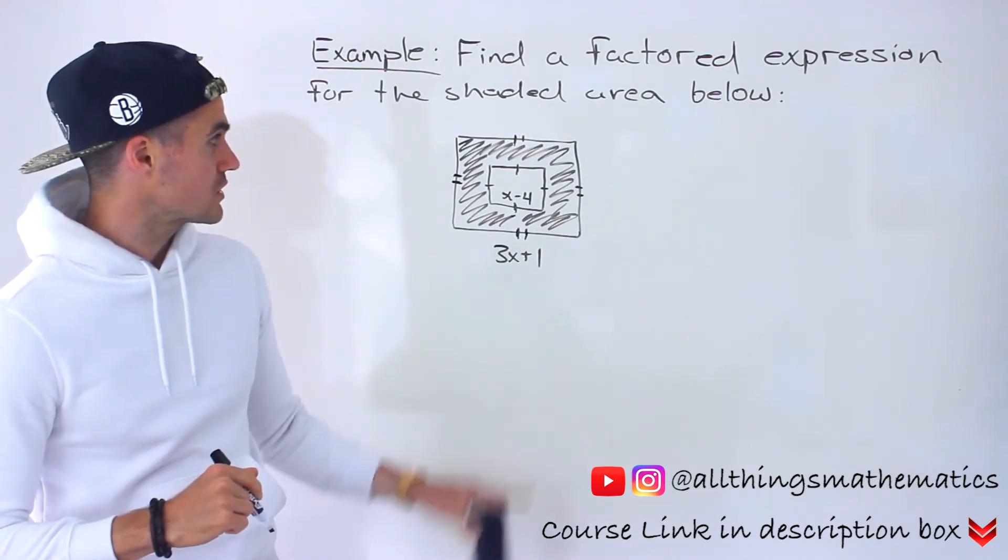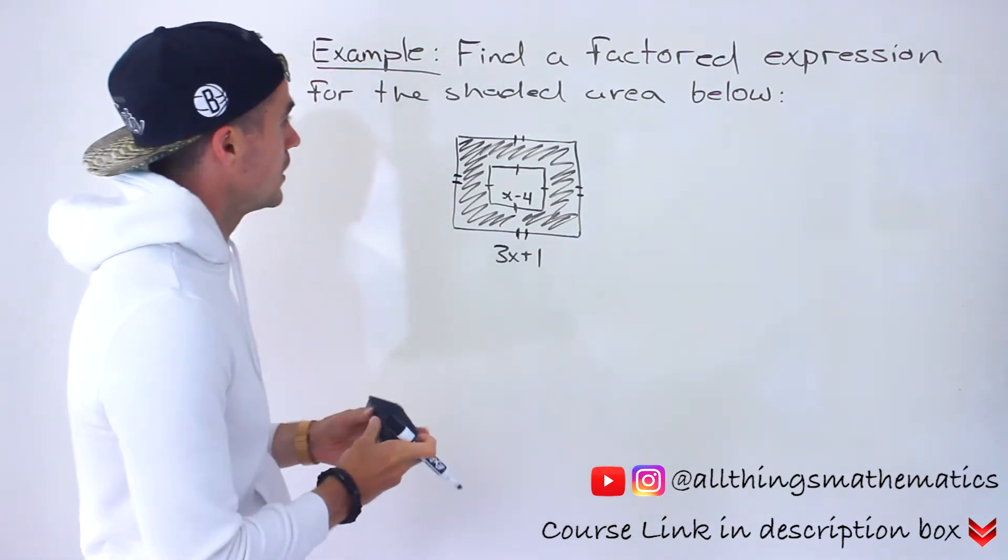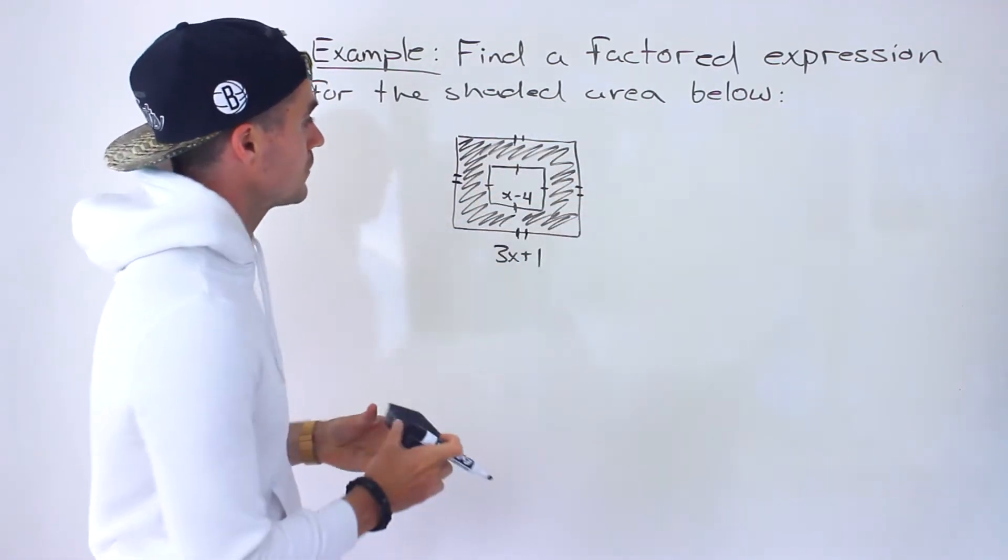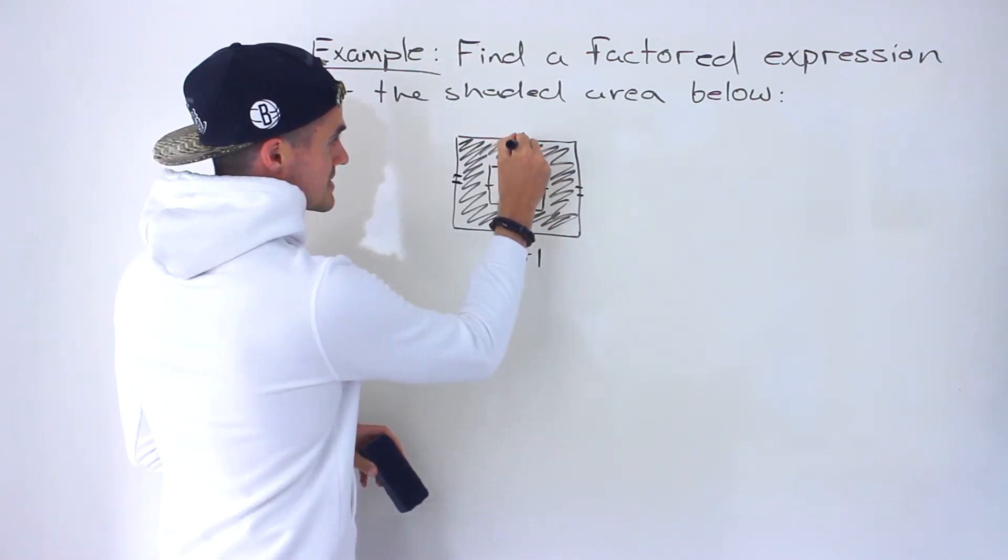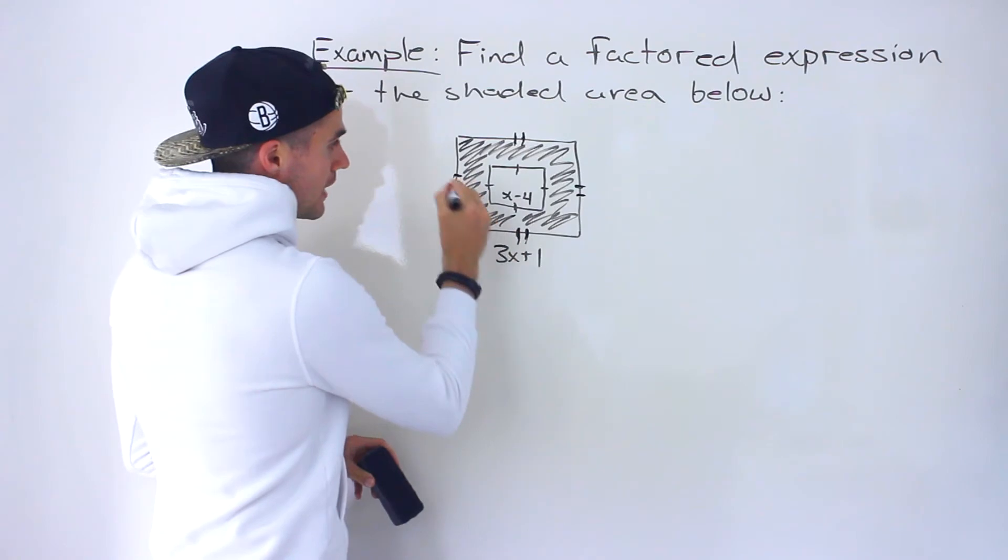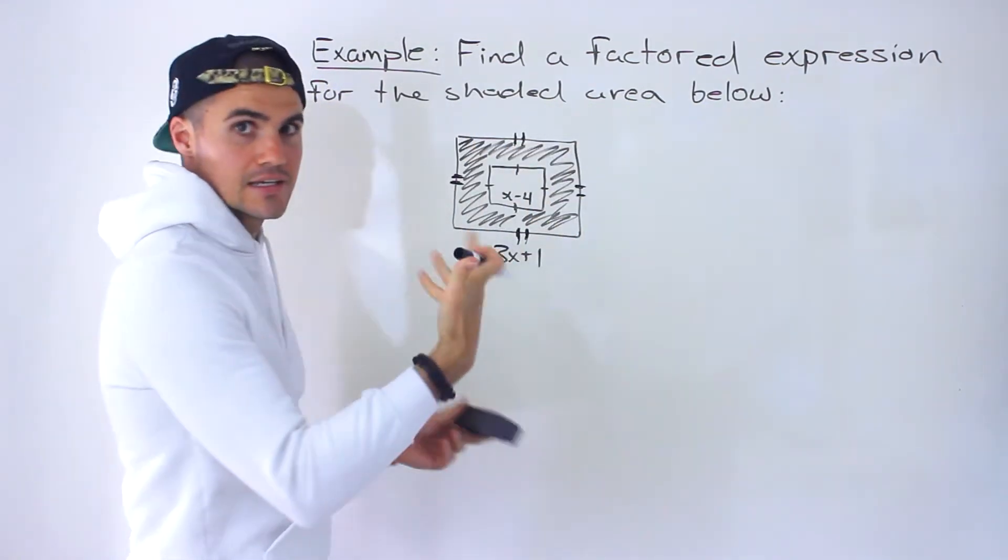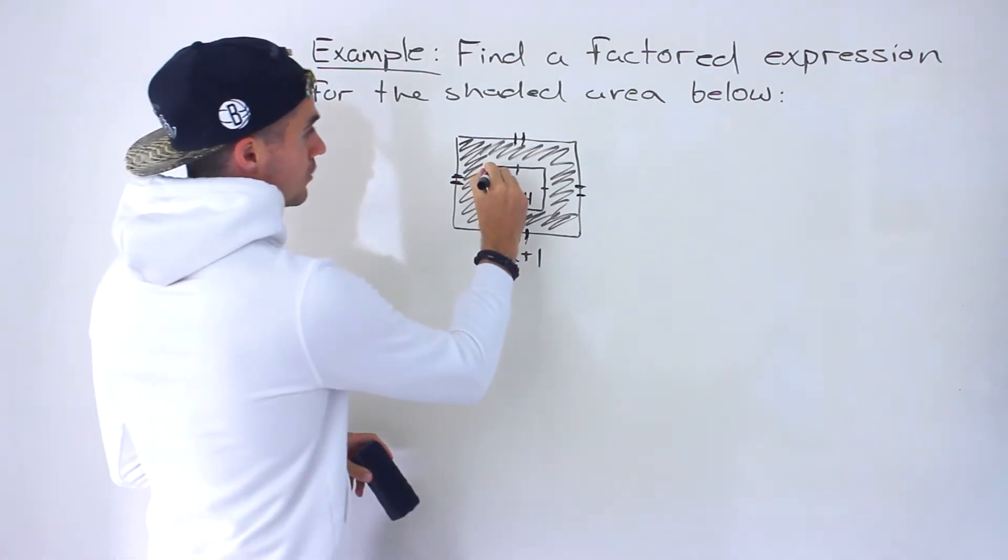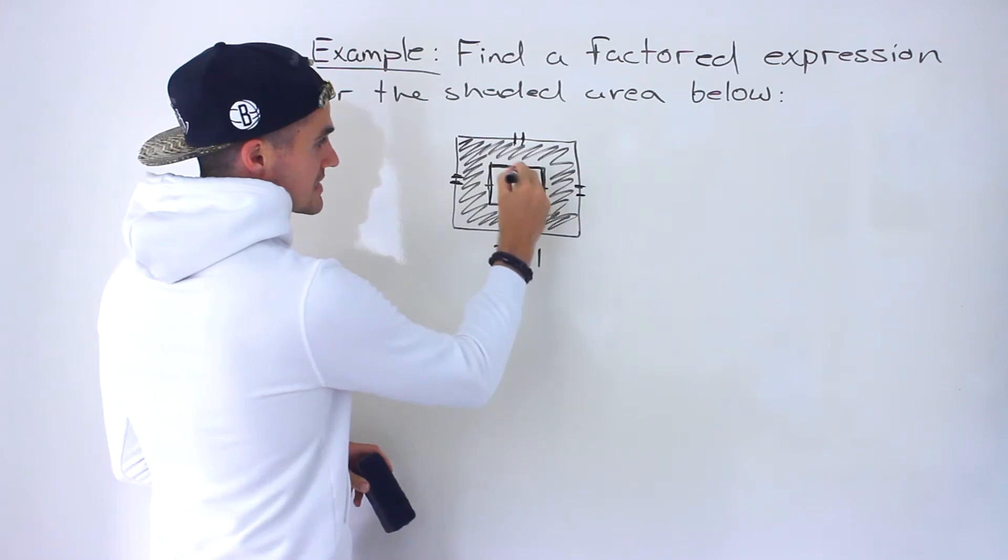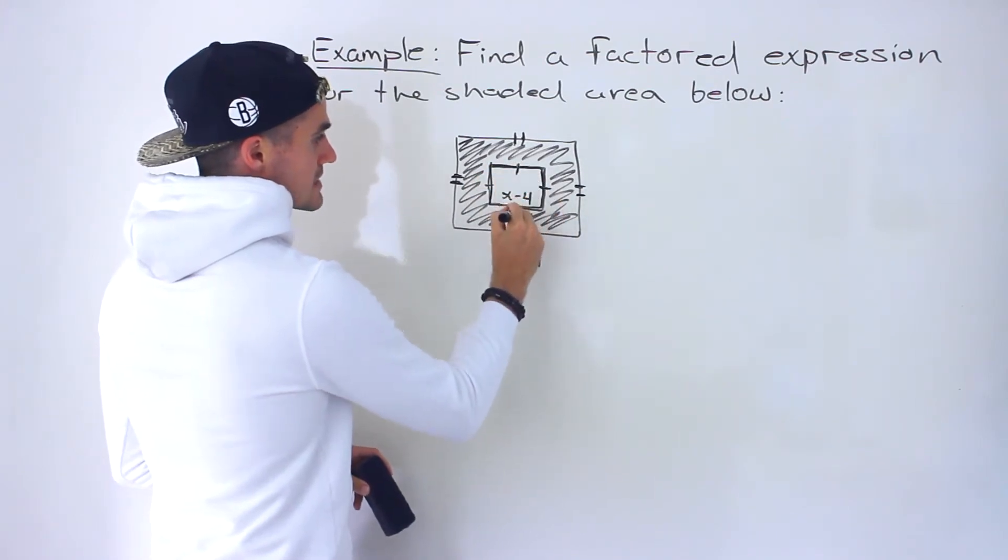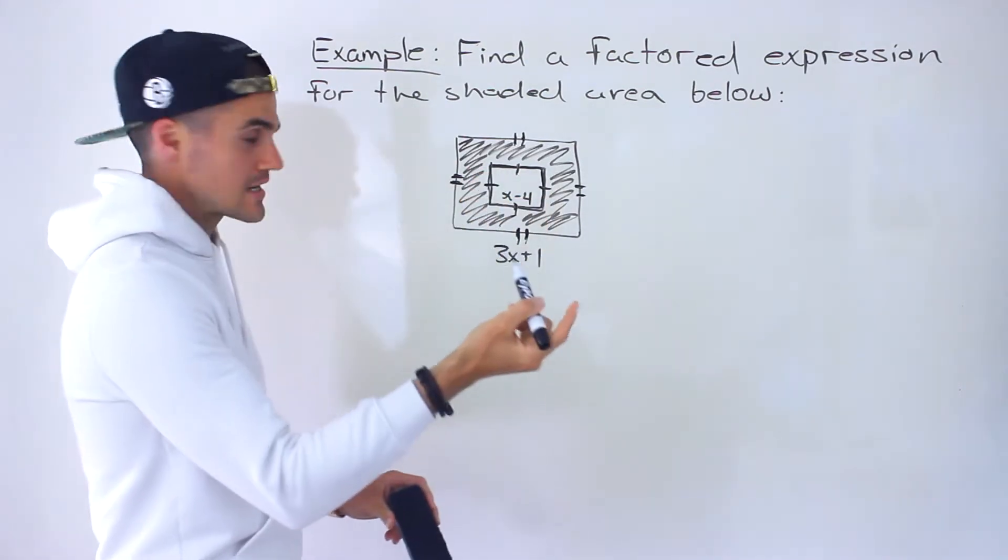We have to find a factored expression for this shaded area. Notice that this particular shape has a larger square. We know it's a square because each side has this double line symbol, meaning that the length of each side is the same. Then we have this smaller square, and each side has this single line going through it, meaning that each of these sides also have the same length.